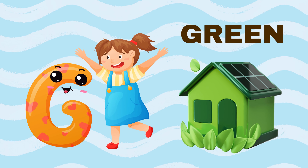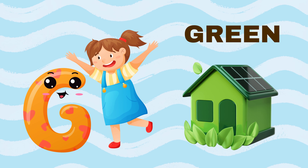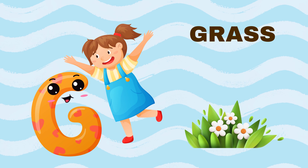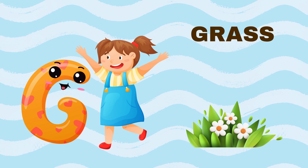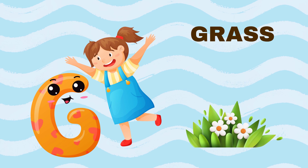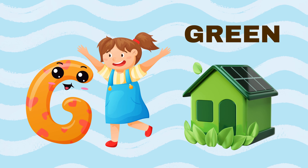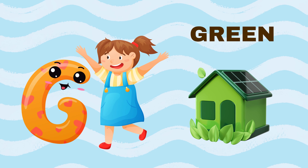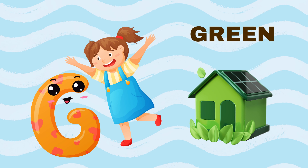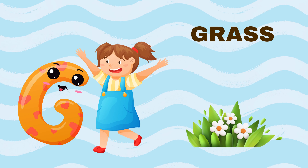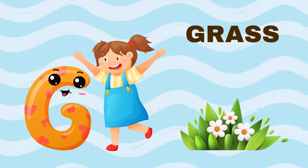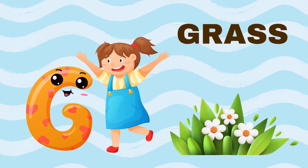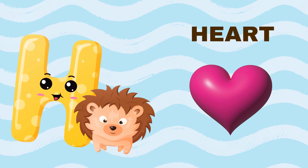G is for Green. g-g-green. G is for Grass. g-g-grass.